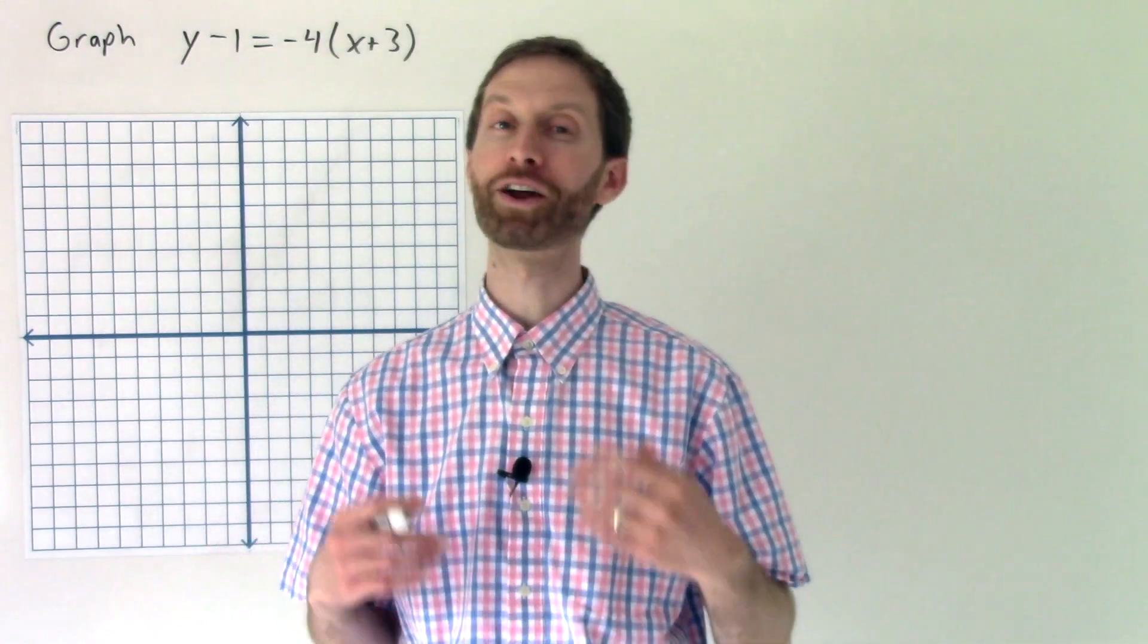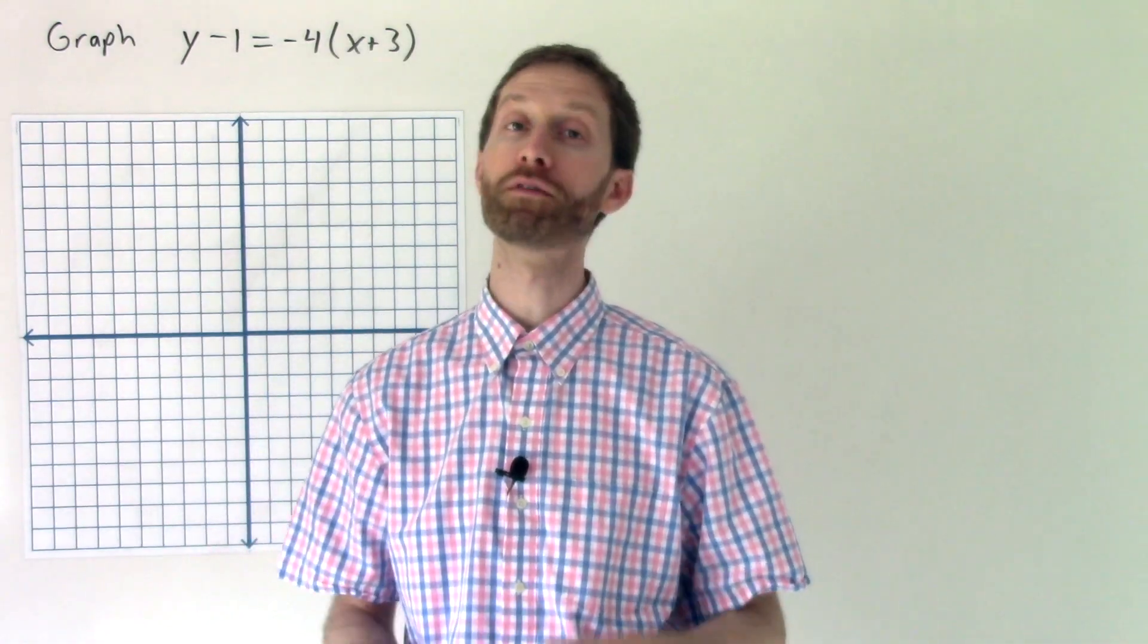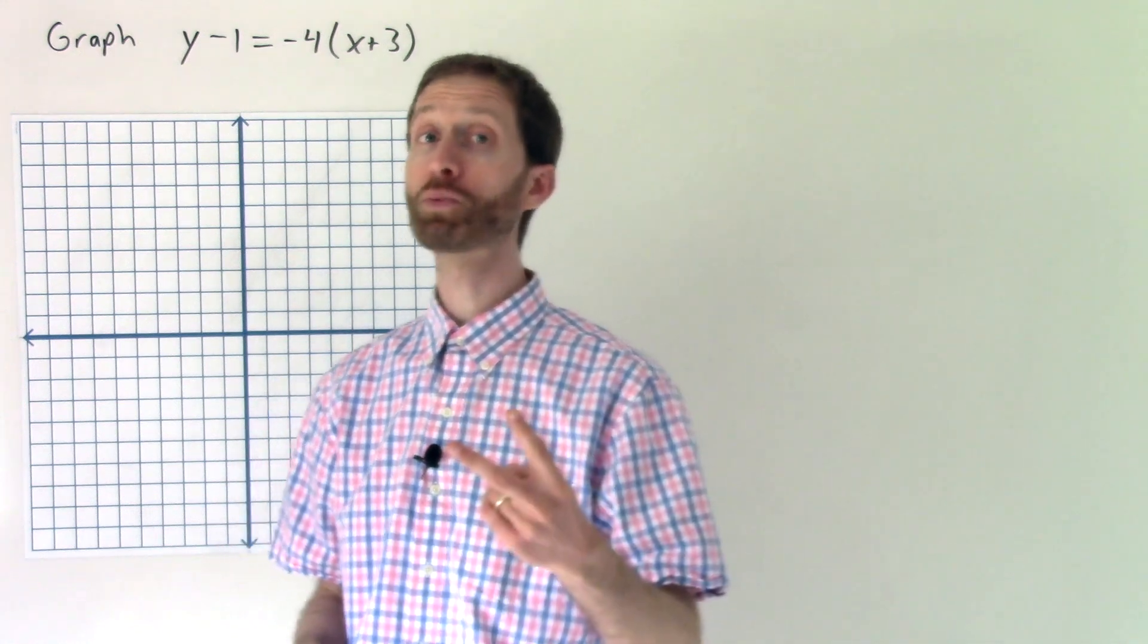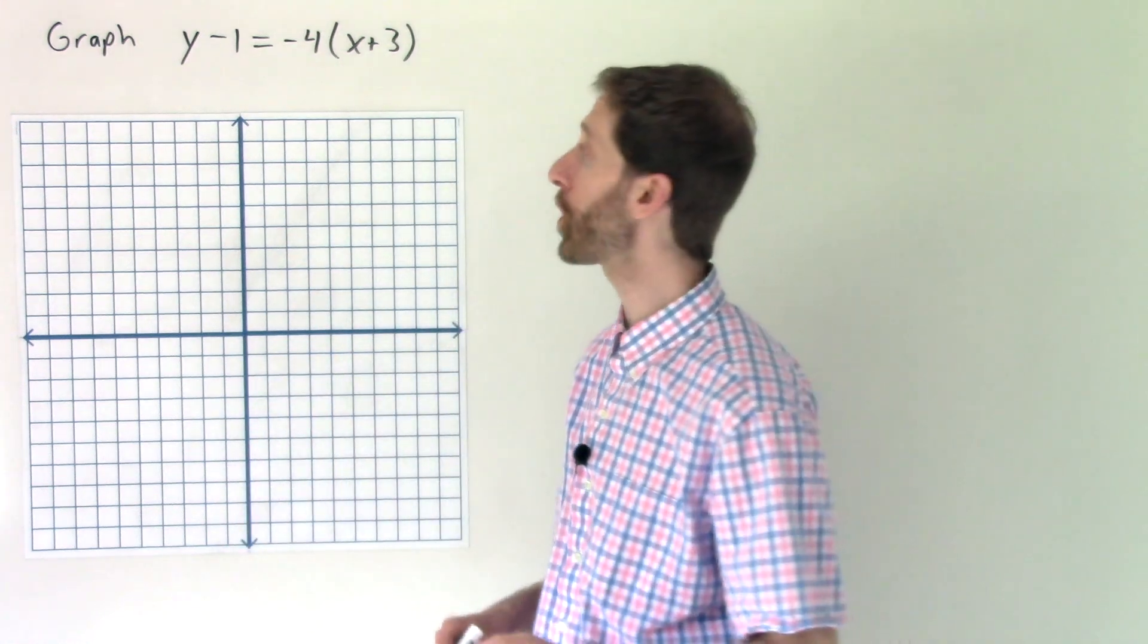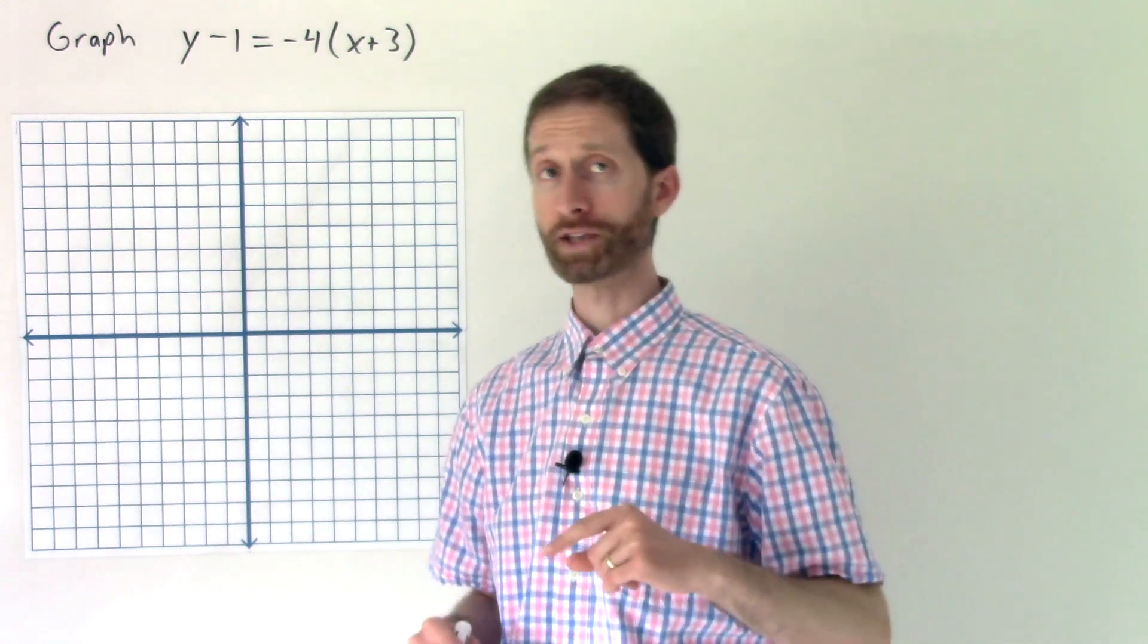In this video, we're going to go over how to graph a point-slope form of the equation of a line. We're going to do two problems for it, so let's dive into the first one, and then in the second half of the video, we'll do one more example.